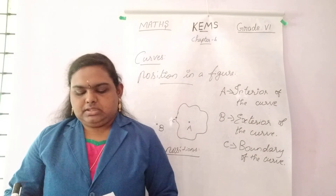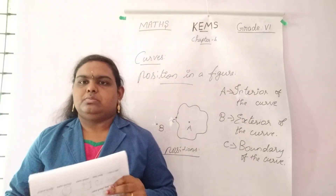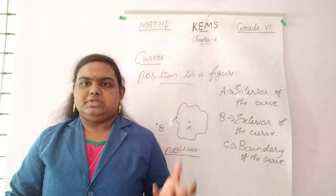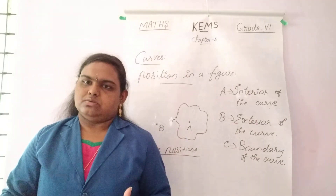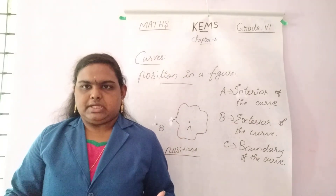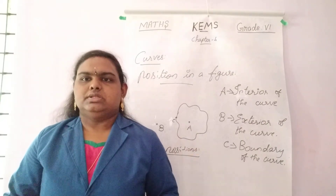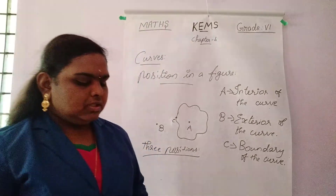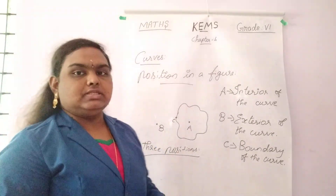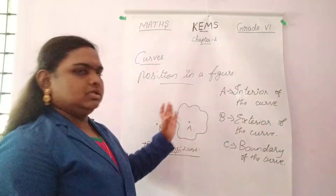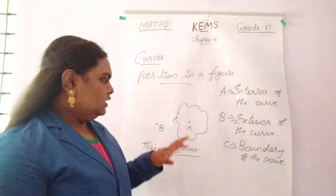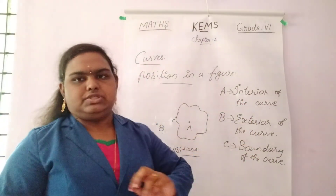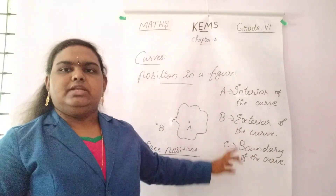Open and closed curve: if a figure is closed, it is known as a closed curve. If it is open type, it is known as an open curve. Positions in the closed curve — first one is the interior, exterior, and boundary: inside, outside, and on the curve.